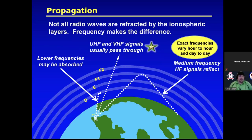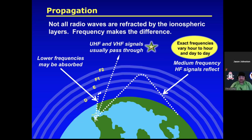Not all radio waves are refracted by the ionosphere — frequency makes a difference. Very low frequency (VLF) signals get absorbed in the ionosphere. UHF and VHF signals usually pass right through. Medium frequency and HF signals often reflect. There's no exact maximum usable frequency — it changes hour to hour, minute to minute, even second to second. You may be talking to somebody and they just fade away.